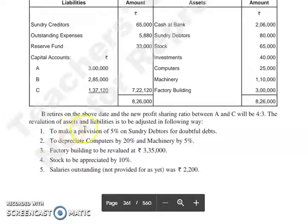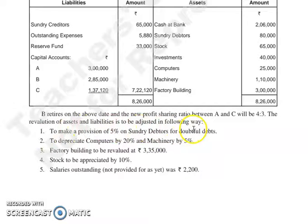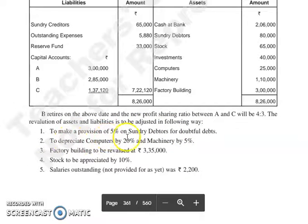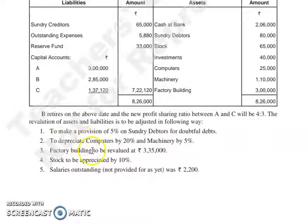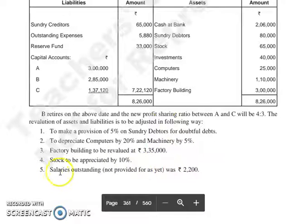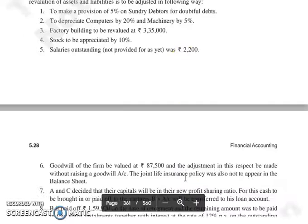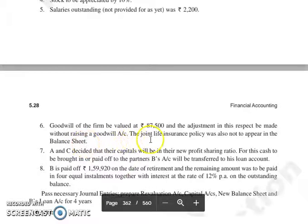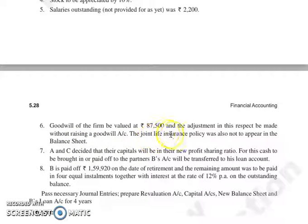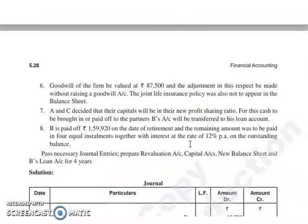The revaluation of assets and liabilities is to be adjusted as follows: make a provision of 5% on sundry debtors for doubtful debts; depreciate computers by 20% and machinery by 5%; Factory Building to be revalued at 3,35,000; Stock to be appreciated by 10%; salaries outstanding not provided for as yet was 2,200. Goodwill of the firm to be valued at 87,500 and the adjustment in this respect be made without raising a goodwill account.